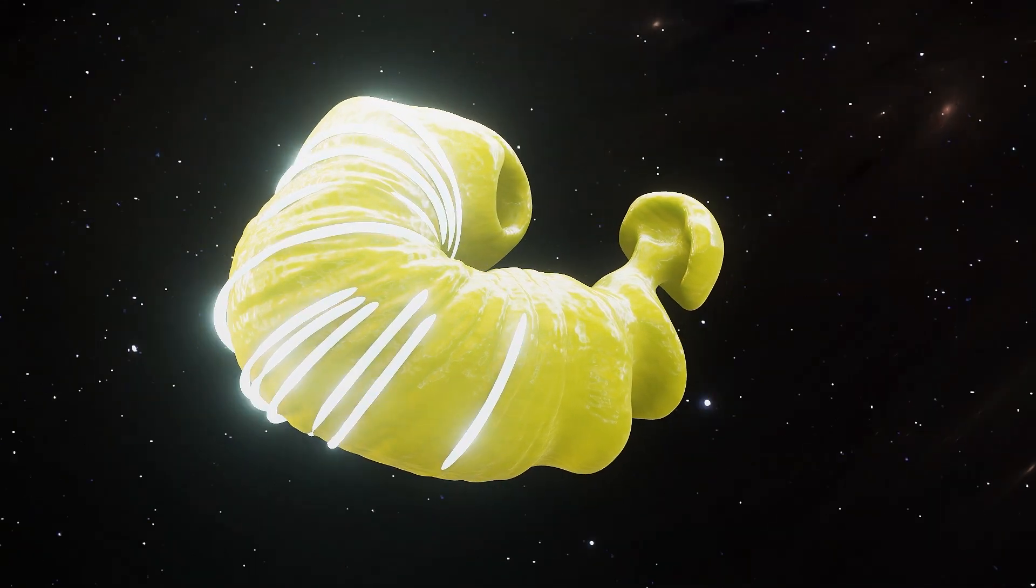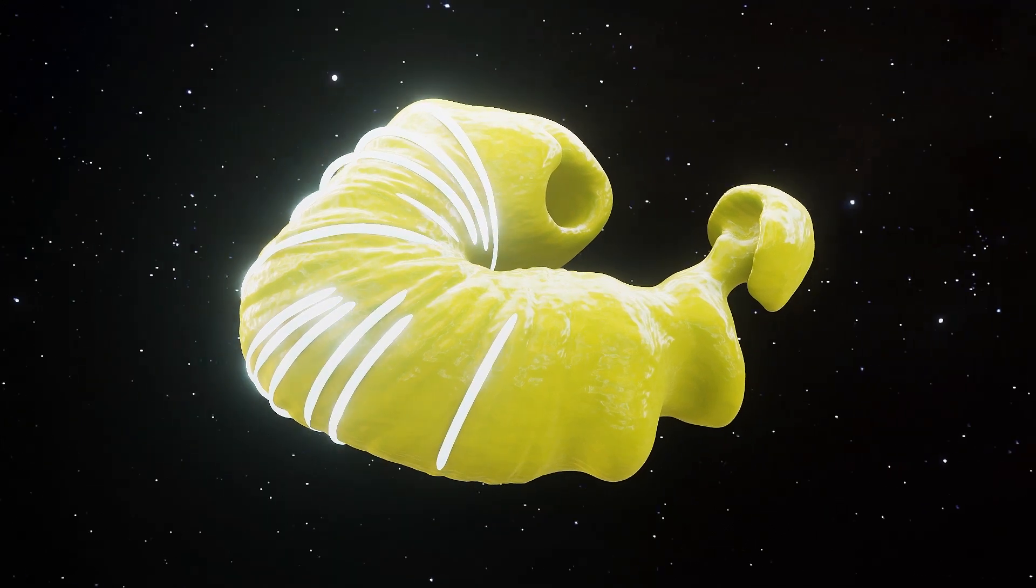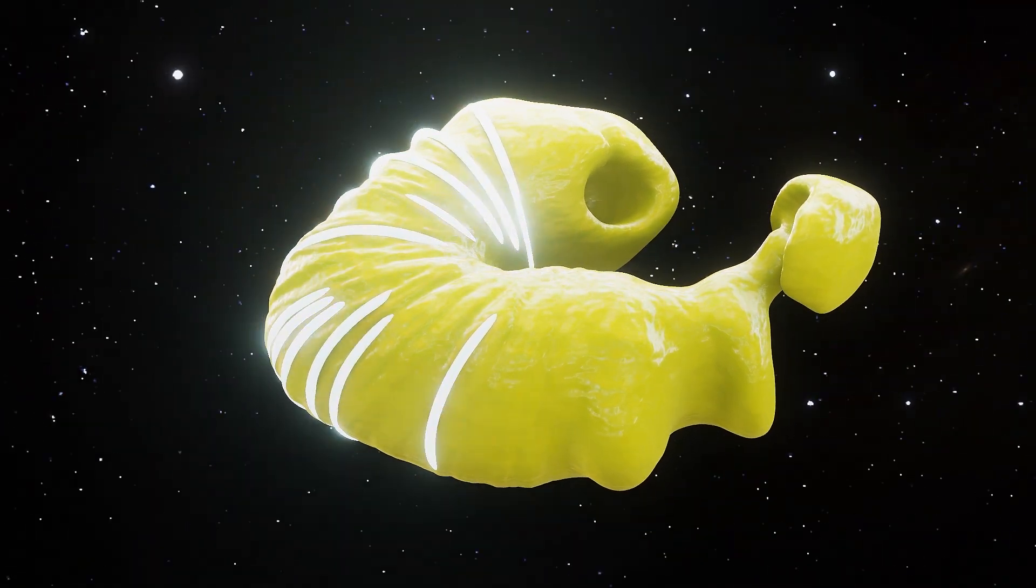Last year, scientists at the DRIVE Science Center determined that the bubble around our solar system may be shaped like a giant croissant.